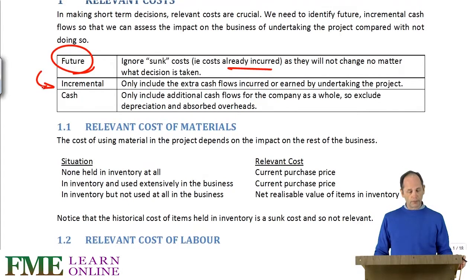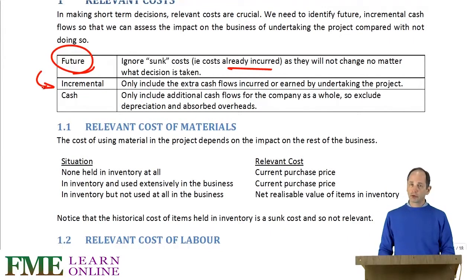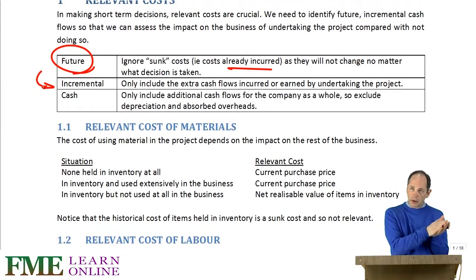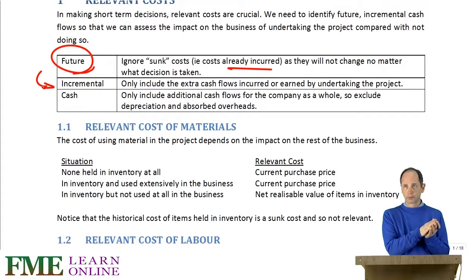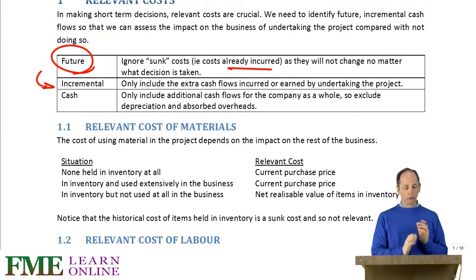Relevant costs also have to be extra. So if we have a workforce which is being paid but at the moment doesn't have enough work to do, and we find them some work to do, the extra cost to the company as a whole is nil — there's no extra cash going out. We are looking at the company as a whole, not just the tiny area involving the project. Whereas if we have to employ people to work overtime when they would normally be going home, it would be the overtime rate which is the extra cash flow expense for the company.